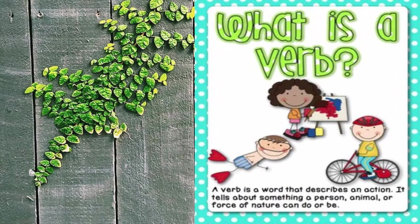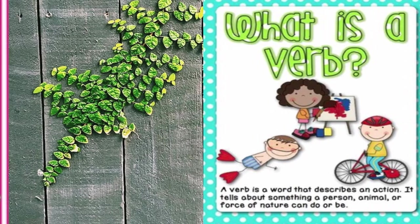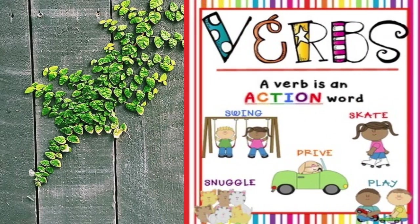What is a verb? A verb is a word that describes an action. It tells about something a person, animal, or force of nature can do or be. A verb is an action word, so let's look at some words that show action.